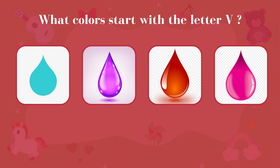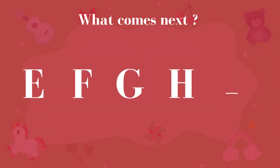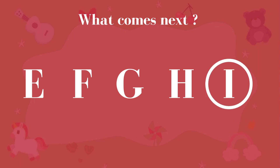What colors start with the letter V? Violet. What color does the sky appear when it rains? Gray. What comes next? I.